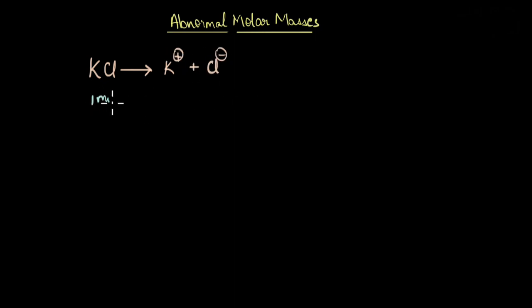That means if we dissolve 1 mole of KCl, we would get 1 mole each of K plus and Cl minus ions. As a result, in the solution, we have 2 moles of particles.